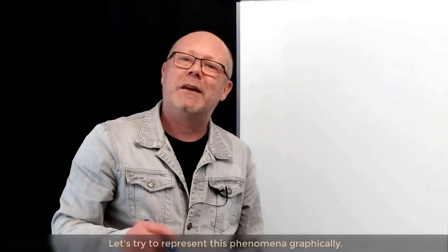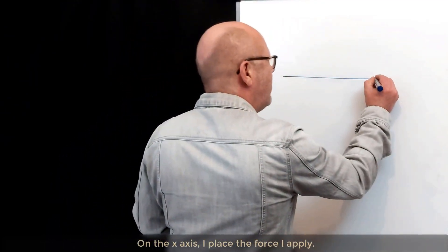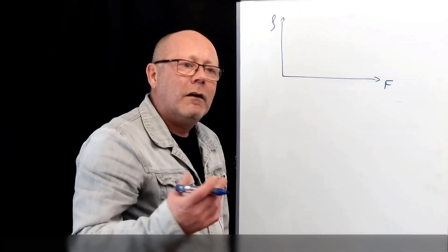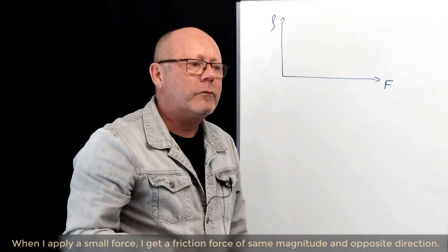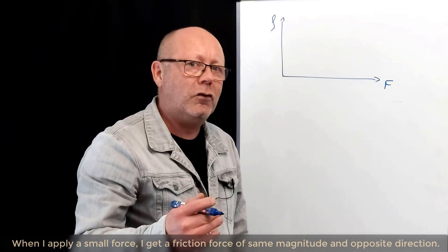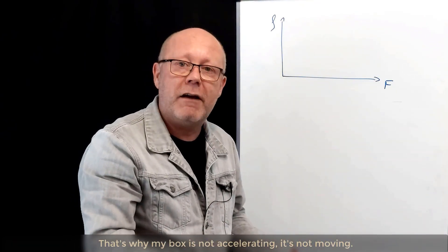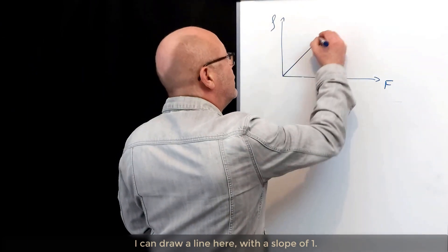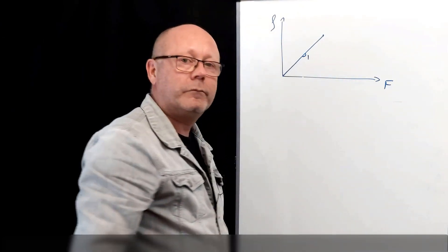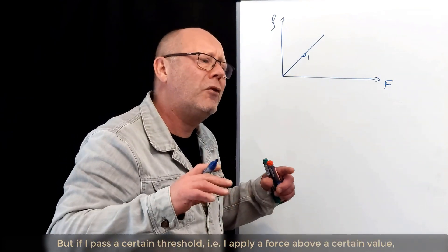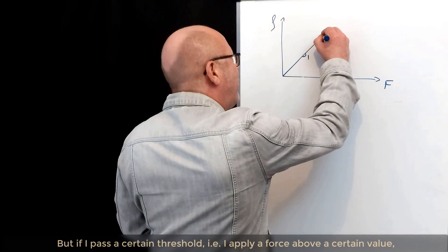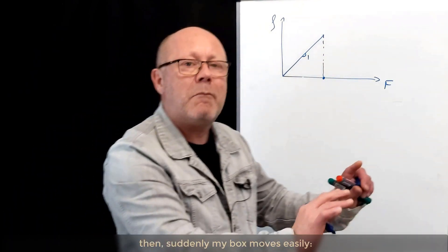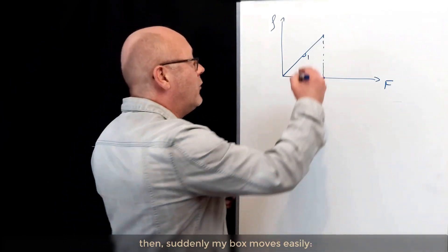Let's try to represent this phenomenon graphically. On the x-axis, I place the force I apply, and on the y-axis, the friction that results. When I apply a small force, I will get a friction of same magnitude, but opposite direction. That's why my box is not accelerating, it's not moving. So I can draw a line here, the slope of 1. But if I pass a certain threshold, I apply a force above a certain value, then suddenly my box moves easily. The friction decreases.